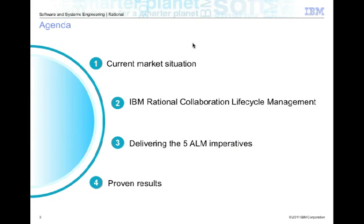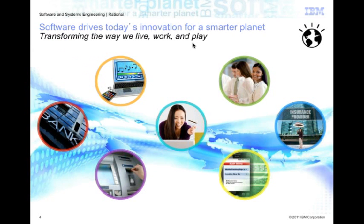The agenda we're going to go through: we're going to start with a little bit of background — just a little bit about the situation and the motivation for why IBM Rational ended up going into this set of technologies. Then into the details behind it — the actual IBM Rational CLM, the collaborative lifecycle management, as we call it. Then walk through the steps by going in order of what we call the ALM imperatives — sort of best practices for what makes a good application lifecycle management environment. And lastly, wrap things up with a couple of proven results.